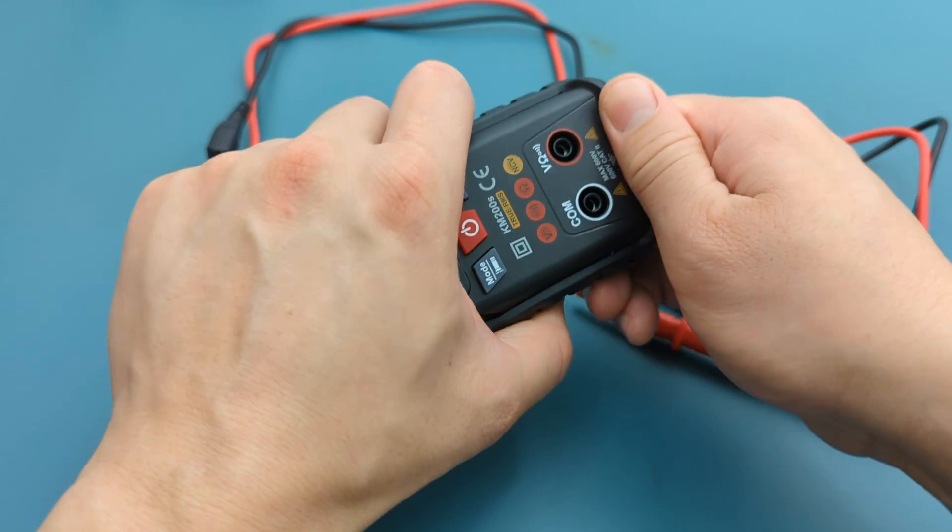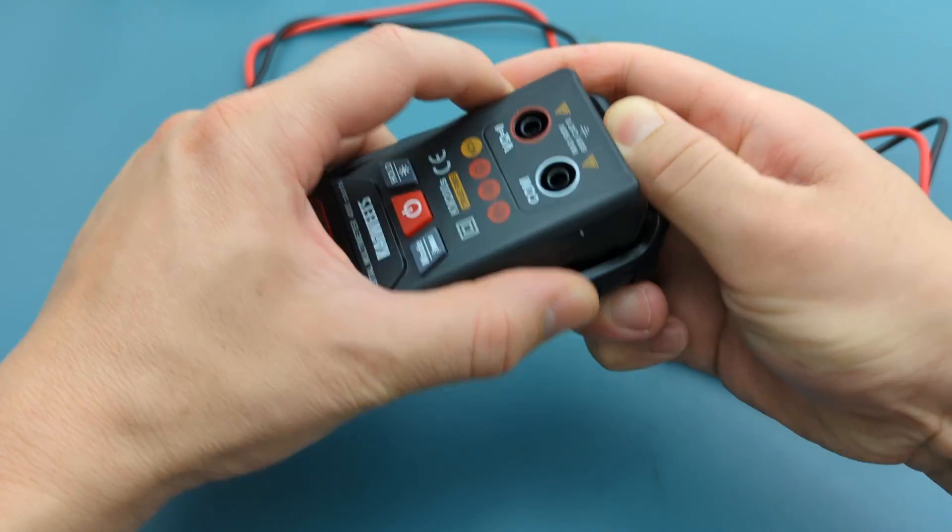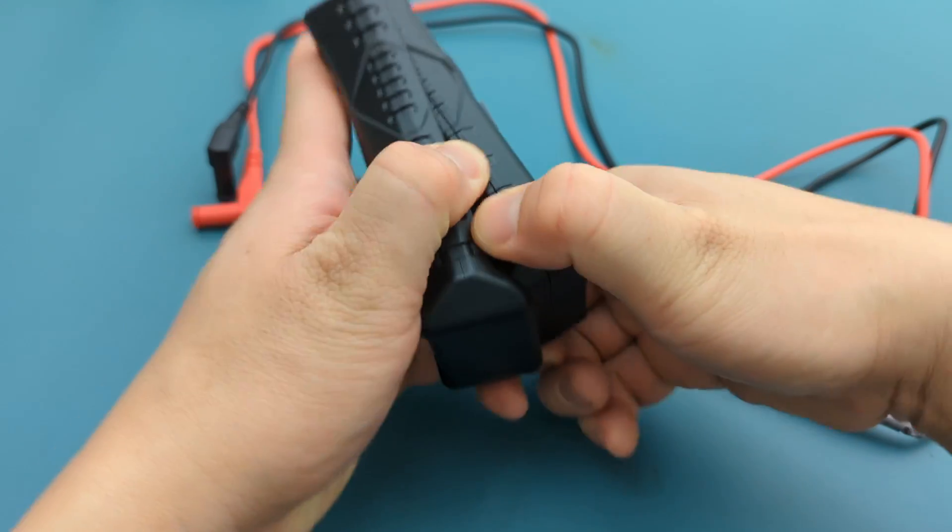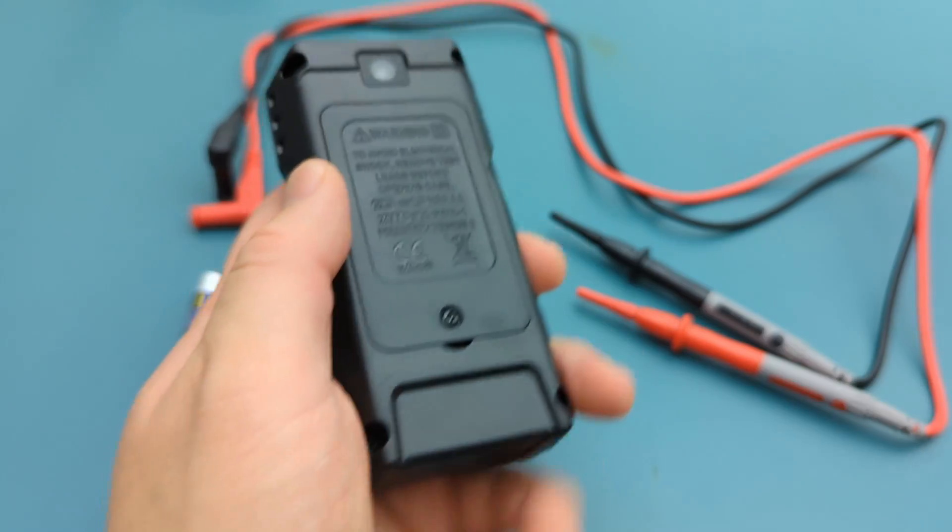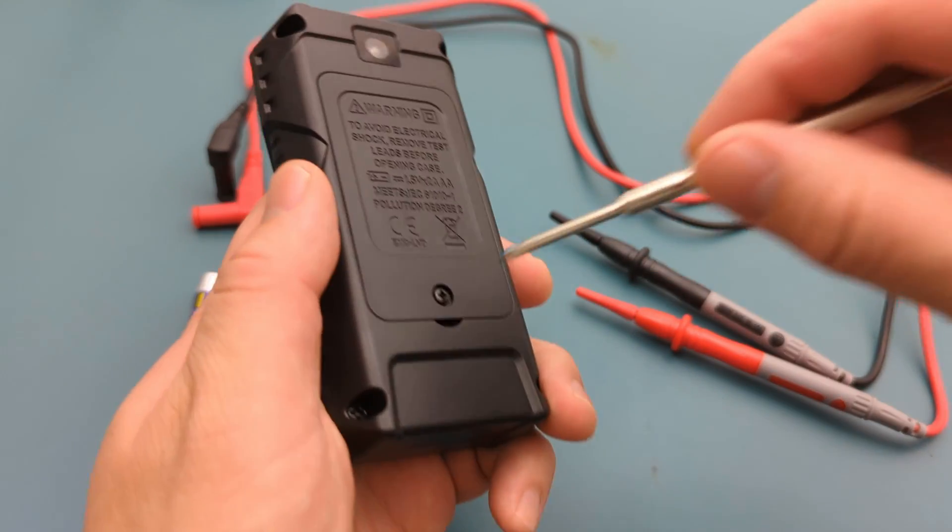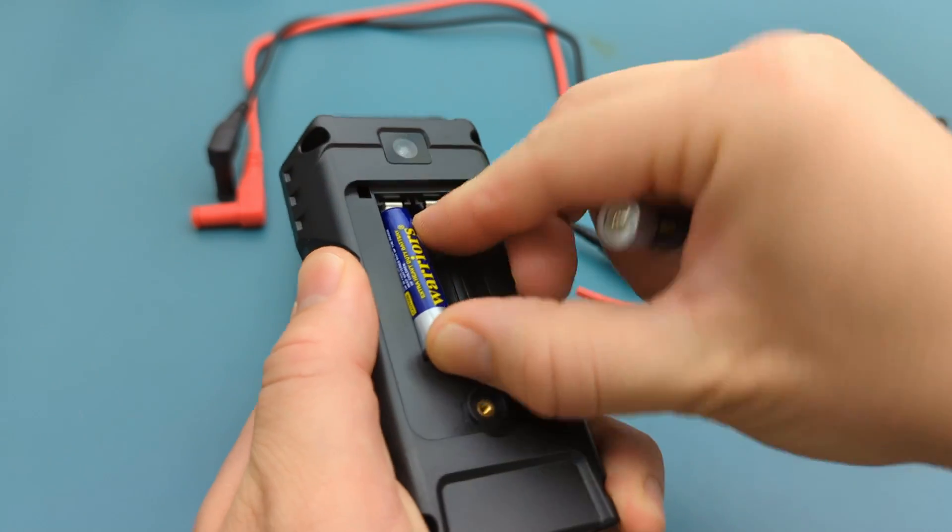Remove the case to insert the AAA batteries. Use a small screwdriver to remove the battery cover. Insert the included AAA batteries into the multimeter.